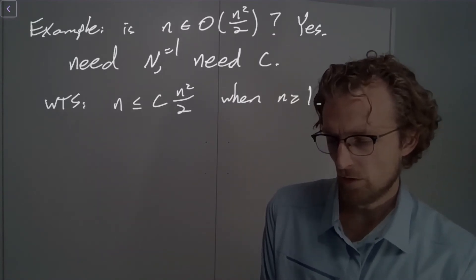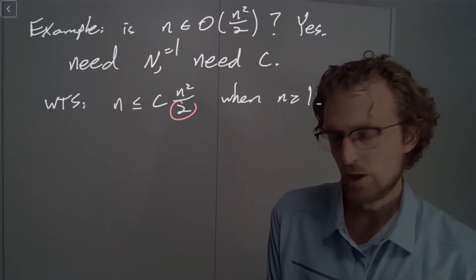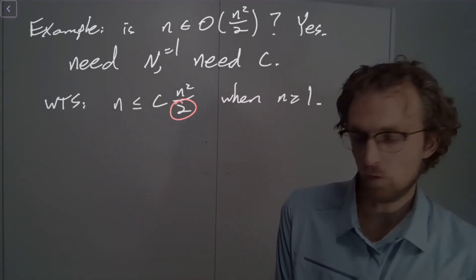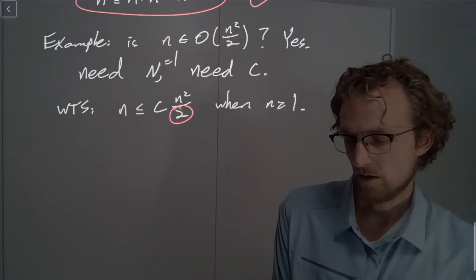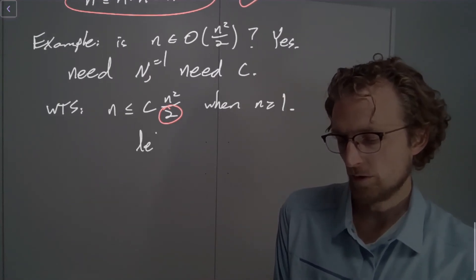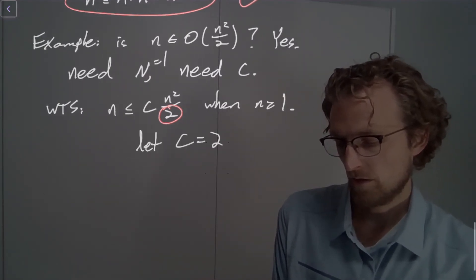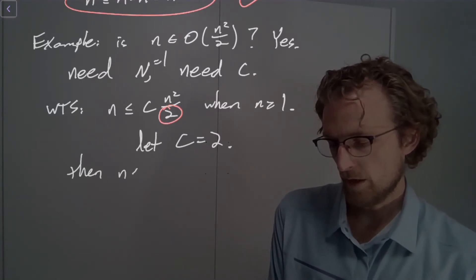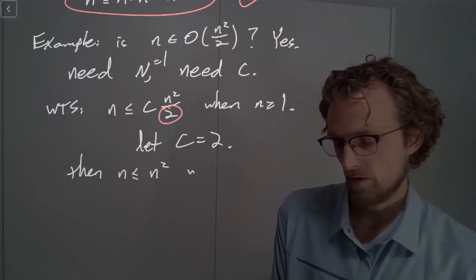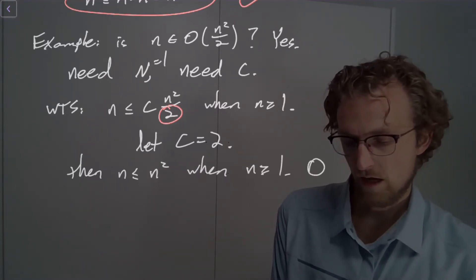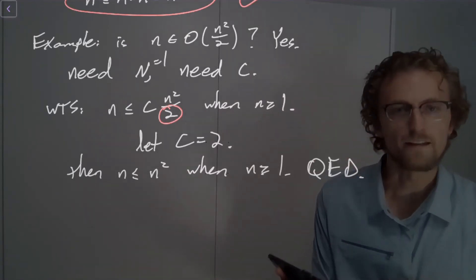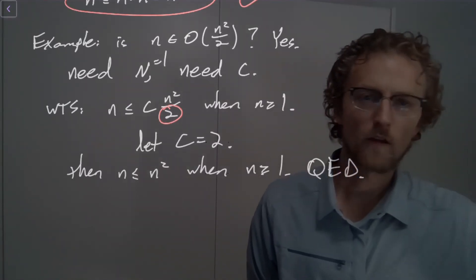And what c makes that true? Well, what's the issue here? What's the only problem? The only problem is the 2. So let's just choose the c to cancel out that 2. And then we're in good shape. Then we're in business. So we can just say, let c equal 2. Then, n is less than or equal to n squared, when n is greater than or equal to 1. Done. And I'm going to write my QED. Thus, I've proved it, whatever the Latin is for that.